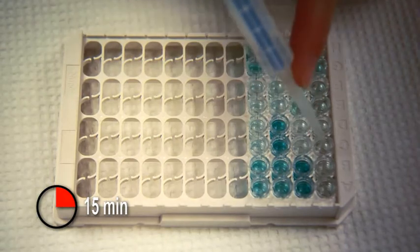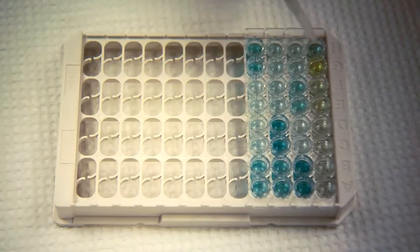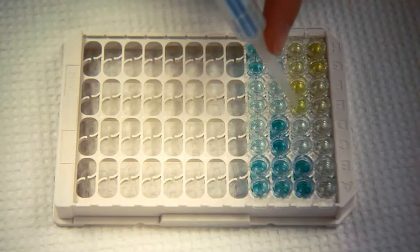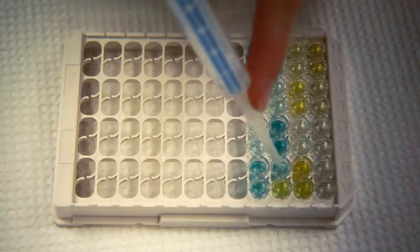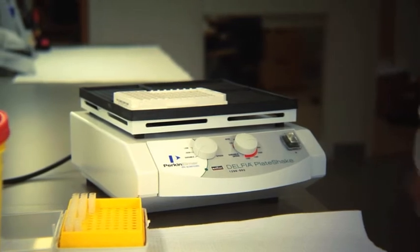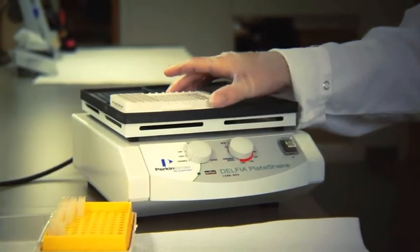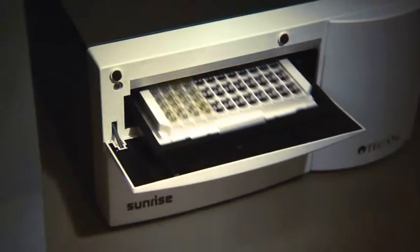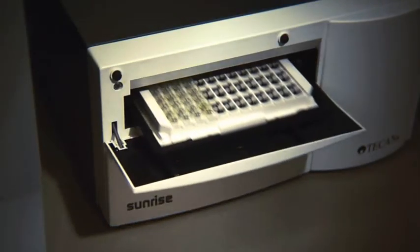Add stop solution to each well. The solution in the well will turn yellow. Shake the plate for 5 seconds to ensure the reaction has reached a complete stop. Read the optical density at 450 nm and calculate the results.